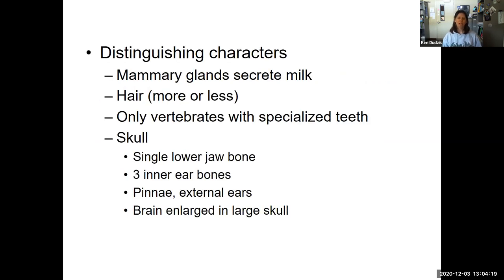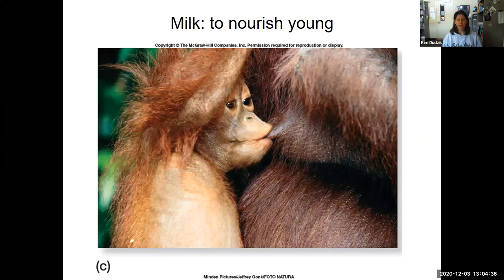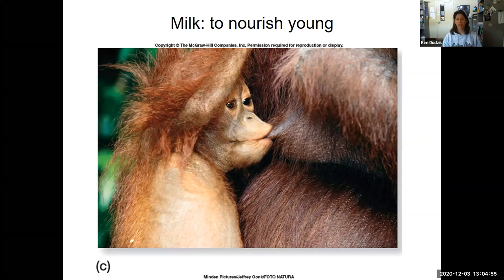The distinguishing characters of class Mammalia include what you see here. Only mammals have mammary glands that secrete milk, and they use milk to nourish their young. Mammals use their own body in order to nourish their young. An early form of animals called the monotremes have really reduced milk glands, but they still produce milk and the offspring are able to lap the milk from their mother.